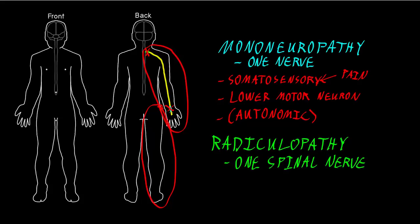Certain parts of certain nerves are most often affected, usually by the mechanical pathology of compression by surrounding structures, such as parts of the wrist or parts of the spine. Although some nerves are more commonly affected by compression from external objects, such as a nerve behind the elbow that we often call the funny bone.